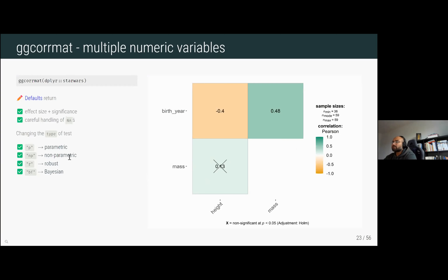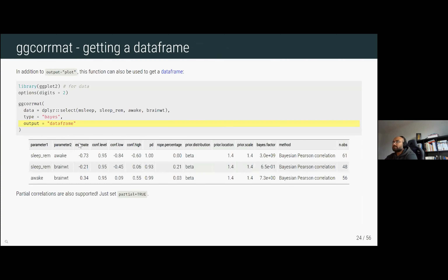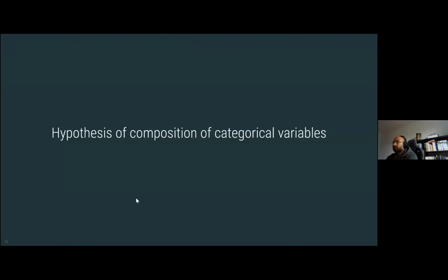You can always change the type of test from parametric to non-parametric, robust, or Bayesian, and all statistical details will adjust accordingly. If you don't want a plot, you can also get a data frame by specifying output equal to 'dataframe'. If you want partial correlations, set partial equal to TRUE.